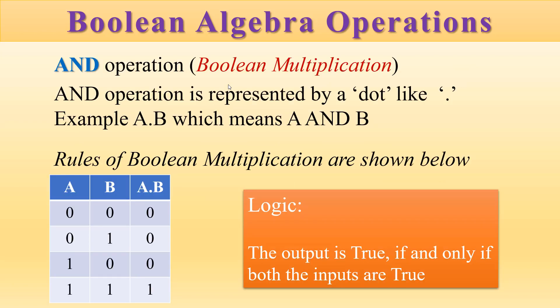First, let us introduce the AND operation. The AND operation, or Boolean multiplication, is represented by a dot. We write A dot B, which means A AND B, where AND is the operation performed on the bits A and B.